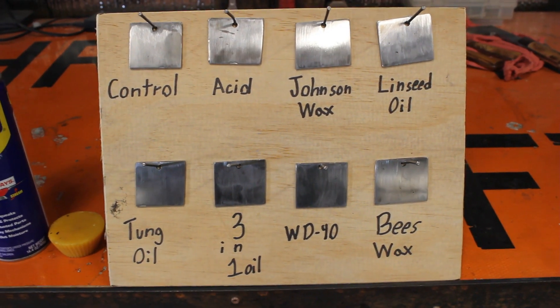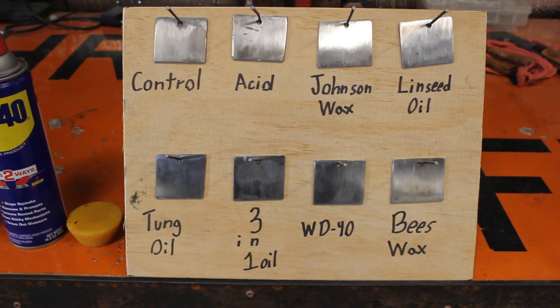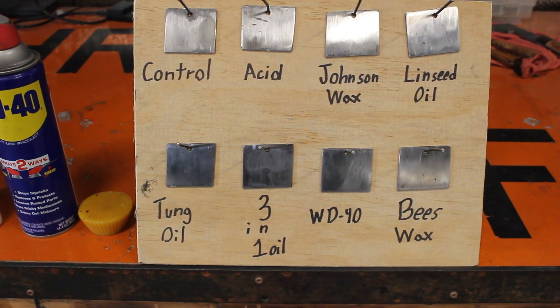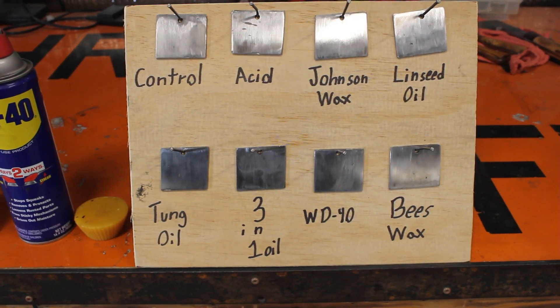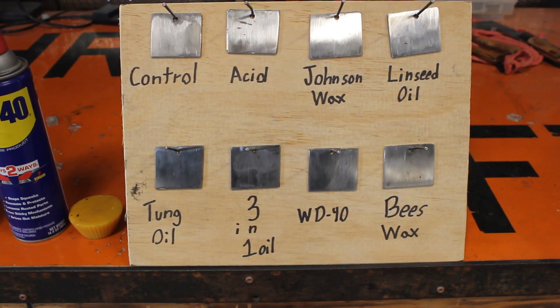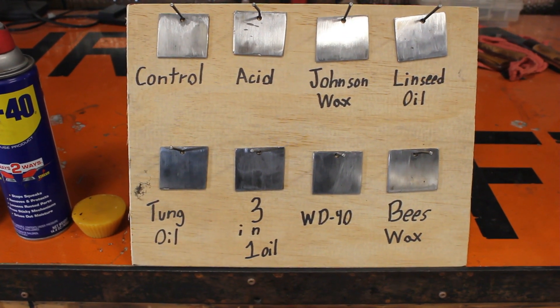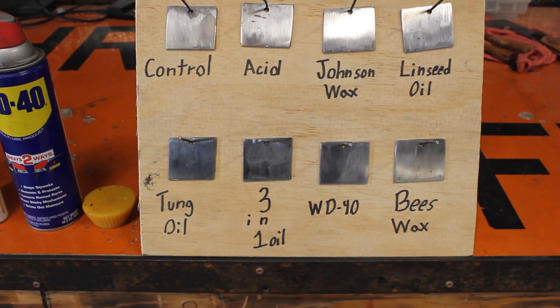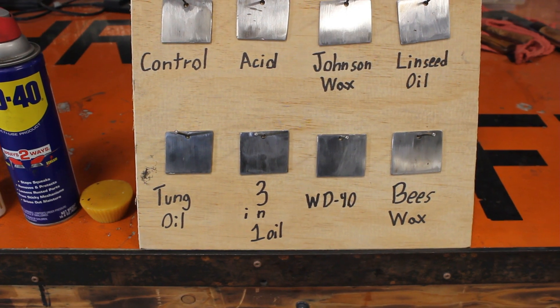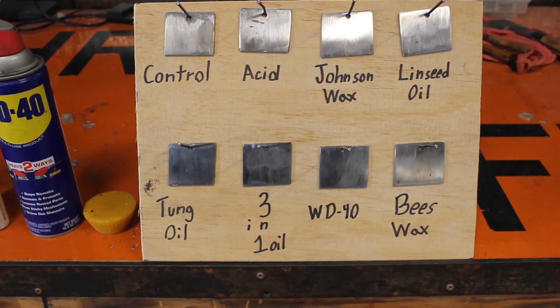Here's all the metal that we're testing. We have a control right there and all different things lined out. This is the board we're using, we're keeping it outside and we're spraying it evenly, not perfectly but as even as we can get it, all eight pieces with water every single day and we're going to leave it outside for a week.